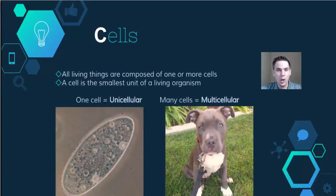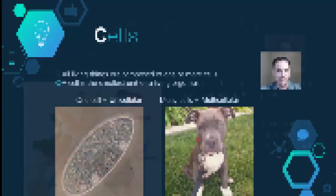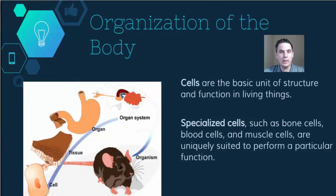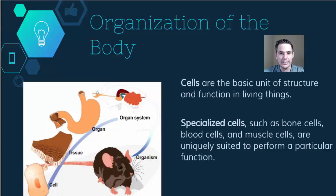As a reminder, we are all made of cells. All living things are made of cells, and the cell is the smallest unit of a living organism. The purpose of cells is to be the basic unit of structure and function in all living things. Some cells perform a variety of different jobs, while others are very specialized — such as bone cells, blood cells, and muscle cells — uniquely suited to perform one particular function.